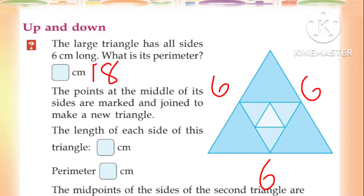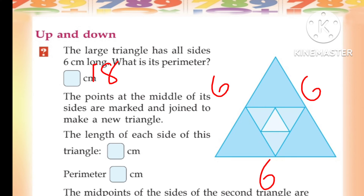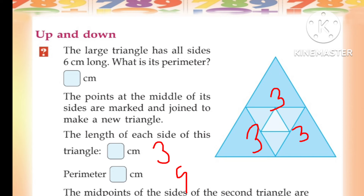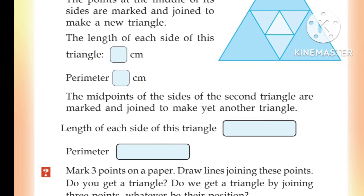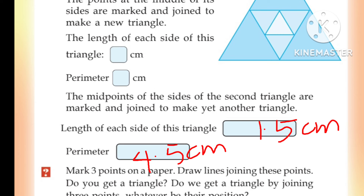What is the perimeter? If she makes a square, what is the length of its side? The length of each side is 1.5 cm. Perimeter is 1.5 plus 1.5 plus 1.5 equals 4.5 cm.